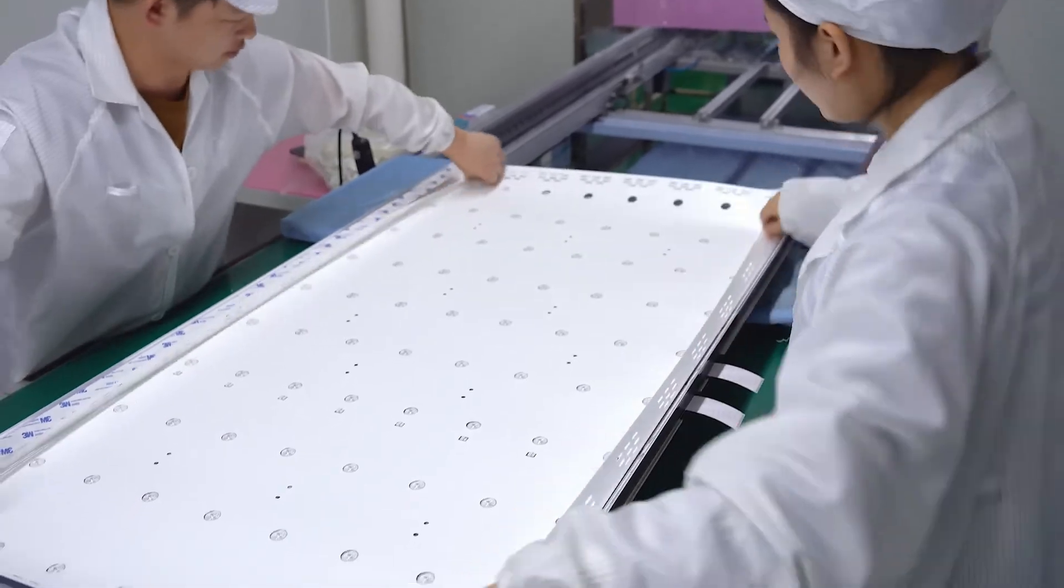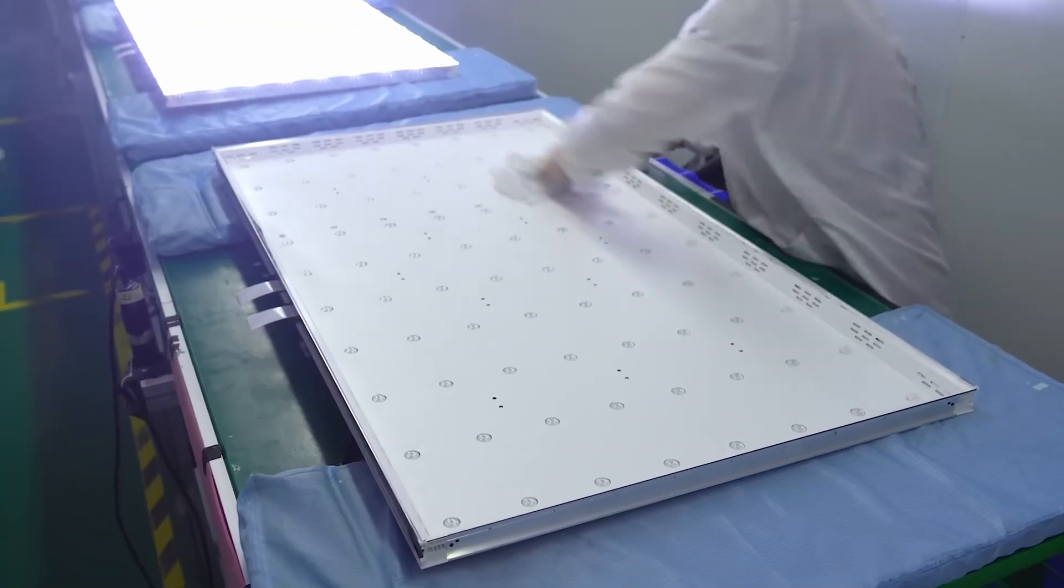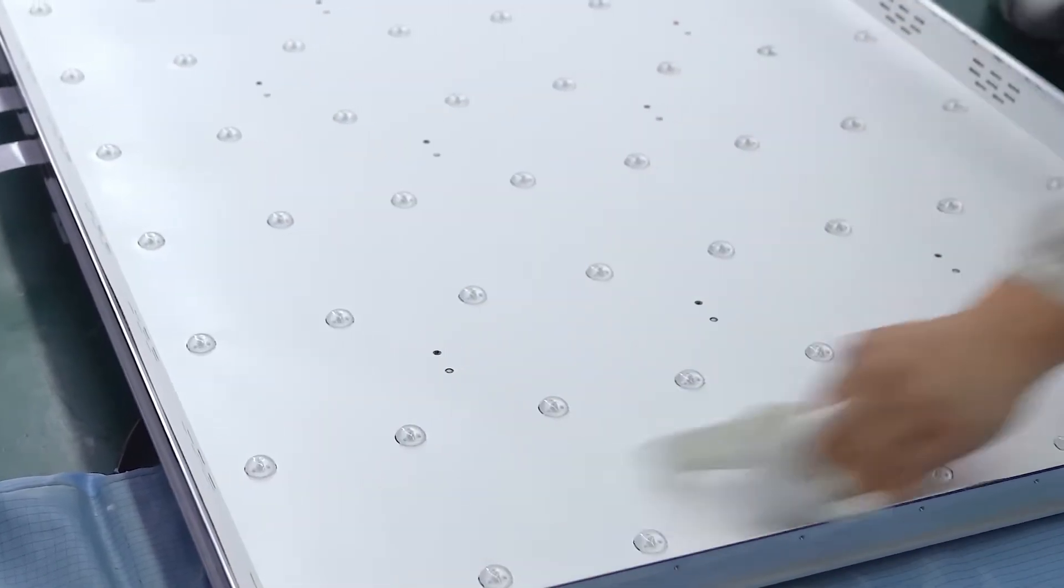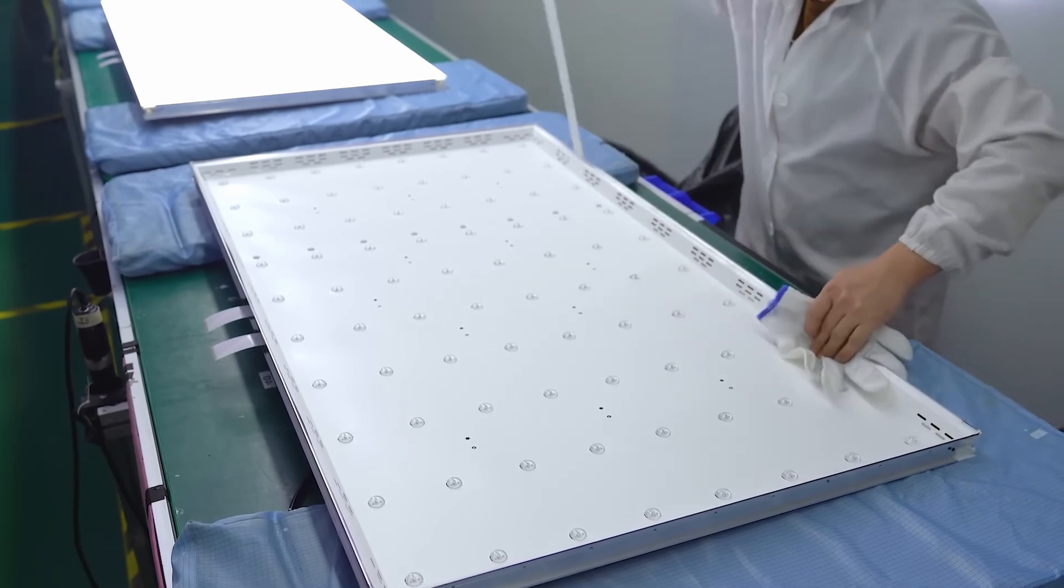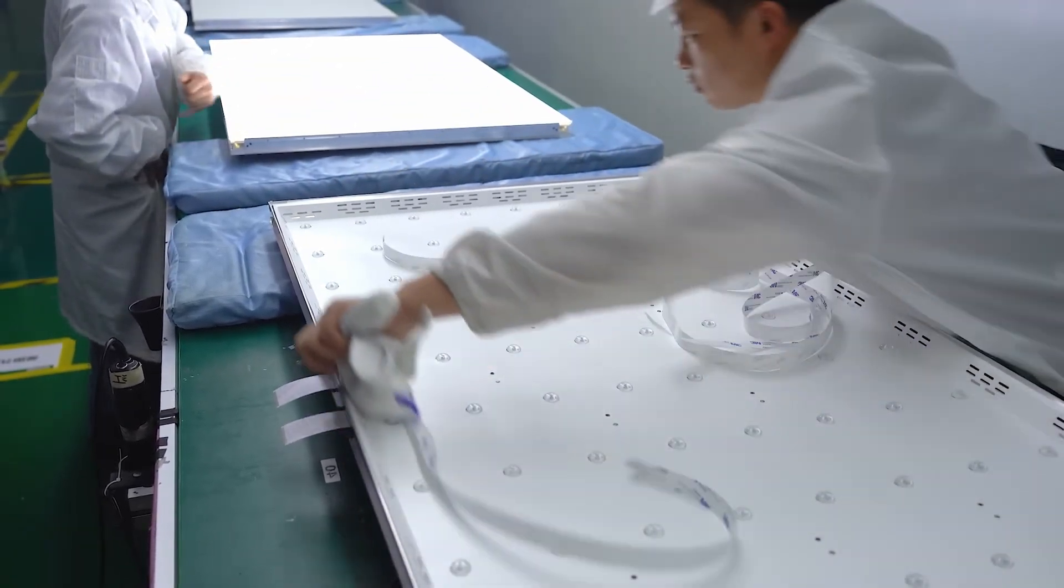To ensure even light distribution across the entire display, the LED backlight units are combined with diffuser and reflector layers. The diffuser layer spreads the light evenly across the screen, while the reflector layer ensures that no light is lost by reflecting any stray light back through the diffuser.